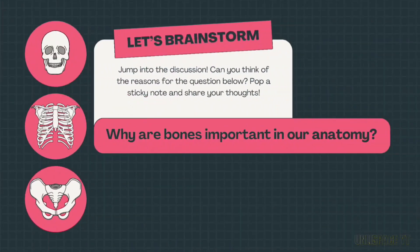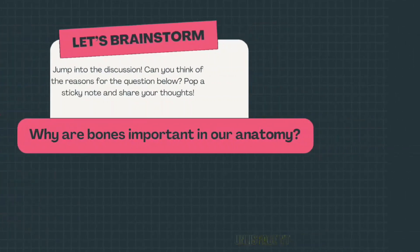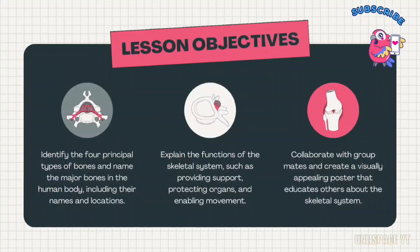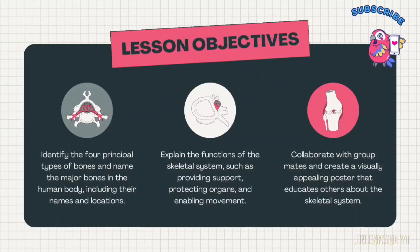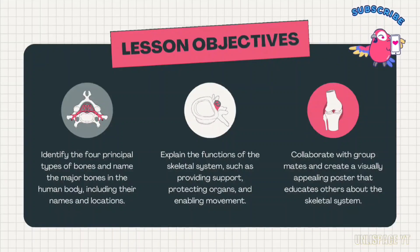First, let's brainstorm. Why are bones important in our anatomy? At the end of this lesson, you will be able to identify the four principal types of bones and name the major bones in the human body, including their names and locations. Explain the functions of the skeletal system, such as providing support, protecting organs, and enabling movement. And collaborate with groupmates and create a visually appealing poster that educates others about the skeletal system.